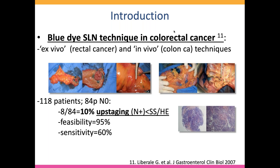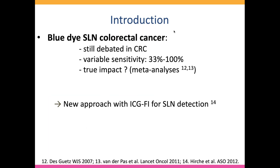Looking more in detail, two of these patients had macrometastases — metastases of more than 2 mm — which might have been found by standard technique too. So in reality, we probably upstaged about 8% of patients in this series. The feasibility was about 95%, which is quite good. However, the sensitivity was low at 60%, meaning we had 40% false negative results. So 40% of patients had positive lymph nodes with a negative sentinel lymph node — that's really the problem of sentinel lymph node in colorectal cancer, and the technique remains debated.